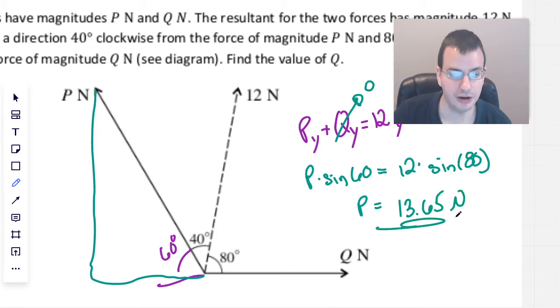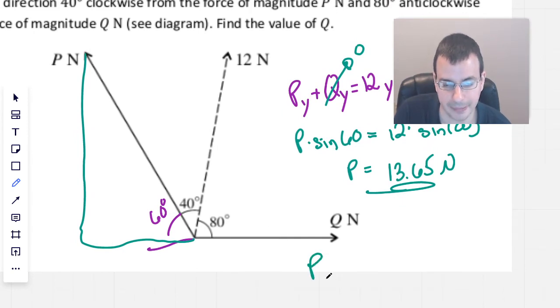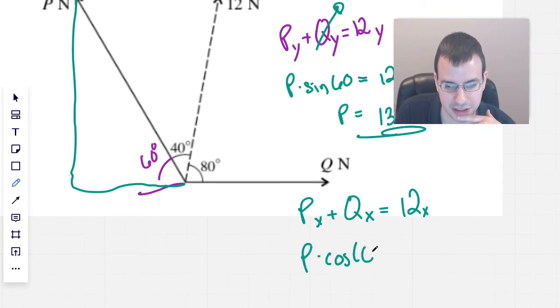So that gives us the magnitude of P. So now let's look at things in the X direction. We know that PX plus QX equals 12 in the X direction. Now we're going to use the cosine, so P in the X direction will be P times cosine of 60. Q is all in the X direction, so that's just going to be Q.